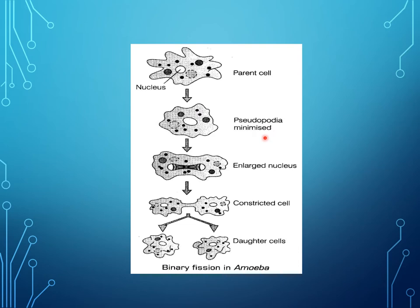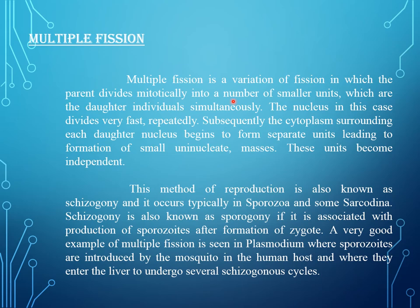In the diagram, the parent cell nucleus is shown. The pseudopodia minimize as the large nucleus divides into two daughter cells. The cell constricts to form two daughter cells — binary fission in amoeba.